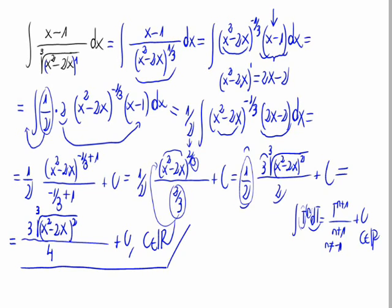The final result is 3 times the cube root of x squared minus 2x, raised to 2, over 4, plus c. Thank you.